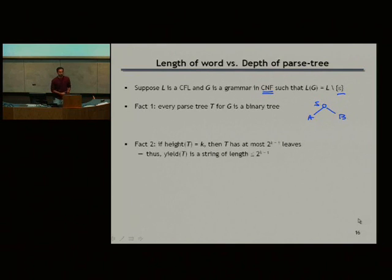Because it's a binary tree, if the height of the tree is K, then it has at most 2^K leaves. You can easily prove this by induction. I'm not going to prove it.